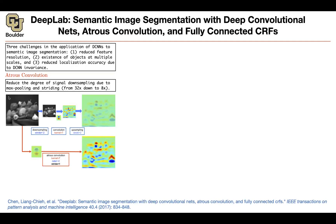But how does it work? Let's say you have an image, and if your stride is 2 you're going to end up with a downsampled image. You can have a kernel — this is just a kernel for visualization purposes, nothing special about it. You take that and convolve it with the downsampled image, and let's say your kernel has a size of 7. In the end you're going to end up with the convolved image, and then we can upsample it.